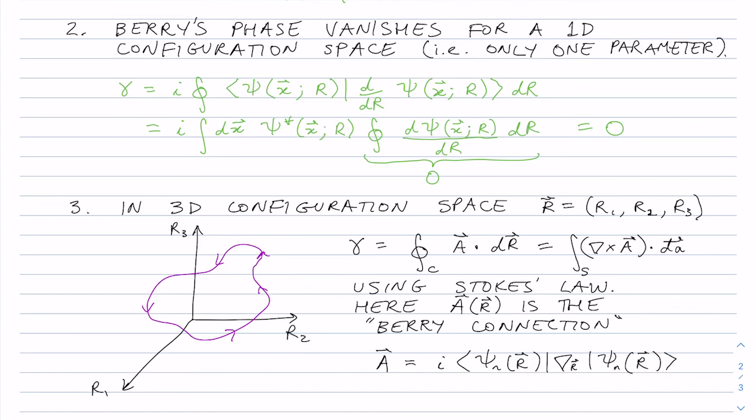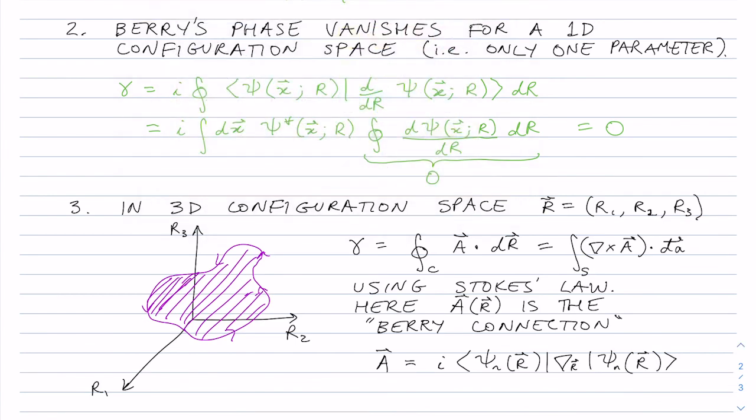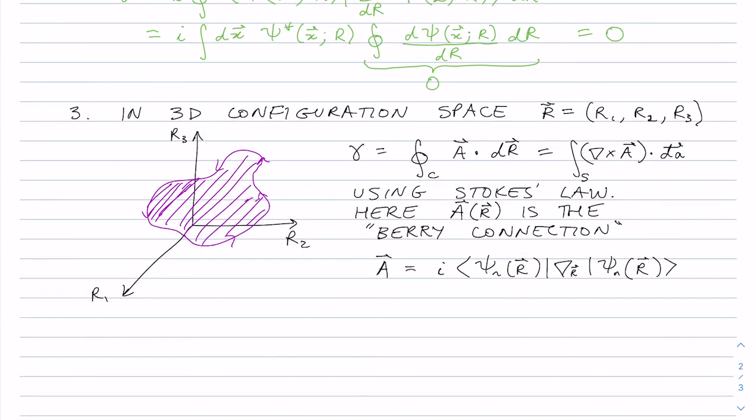So here, a is the Berry connection for a particular instantaneous eigenvalue n. And so using Stokes' law, we can actually turn this into an integral over the surface that's enclosed by the loop. And so you take the curl of this connection over this surface here, and you will get the phase. So it's very similar mathematics to what you get in electrodynamics. And the classic example for this is what we'll do in tutorials, which is a rotating magnetic field.